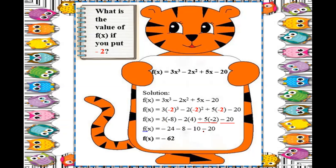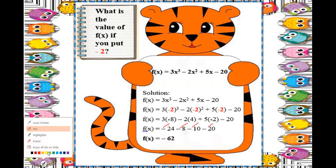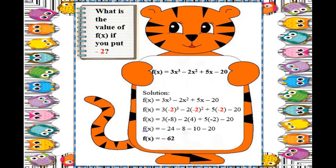Since all terms are negative — negative 24, negative 8, negative 10, negative 20 — they all have the same sign, so you add them: 24 + 8 + 10 + 20 = 62. Copy the common sign, which is negative. So the final answer is negative 62.